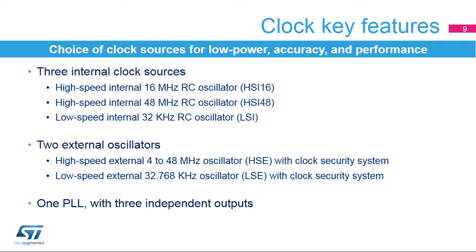STM32G4 devices embed two oscillators for use with an external crystal or resonator: a high-speed external 4 to 48 MHz oscillator (HSE) with a clock security system, and a low-speed external 32.768 kHz oscillator (LSE), also with a clock security system. When enabled, the clock security system can detect failures on external clock sources, and an automatic switch to an internal oscillator is performed — HSI16 in case of HSE failure, and LSI in case of LSE failure. If a failure is detected on the HSE clock, a clock failure event is sent to the brake input of the advanced control timers and to the HR-TIM system fault input, and an interrupt is generated to inform the software about the failure.